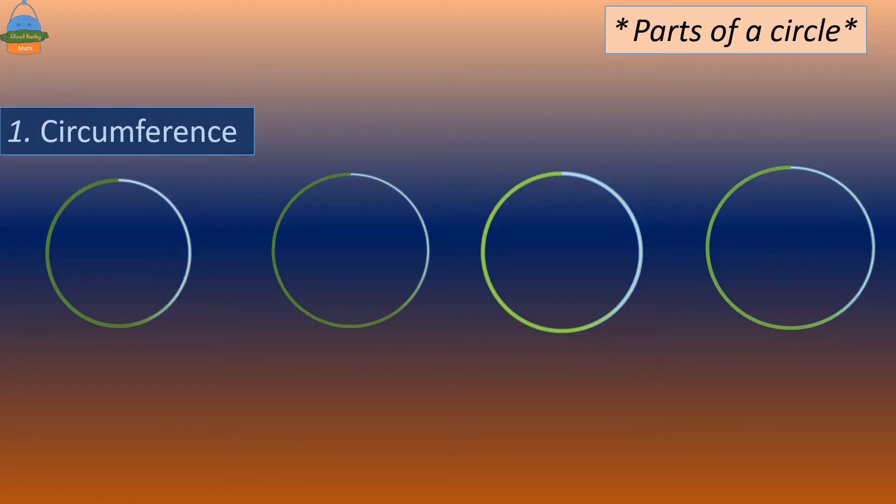The circumference is the distance right around the circle. The center is a point inside the circle that has the same distance to all points on the circle.